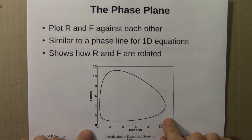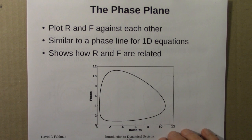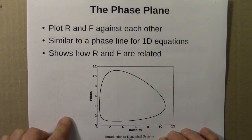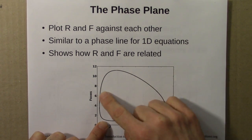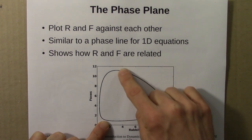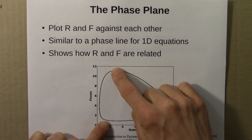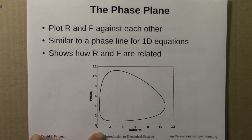That's just the two-dimensional version of the phase lines we've worked with before. We plot R and F against each other, and it shows how they're related. In this case, we move this way on the diagram: the rabbit population increases, then the fox population increases while the rabbits decrease, then the foxes decrease, and then the rabbits come back again. So we see how these two cycles are related. That's the phase plane.